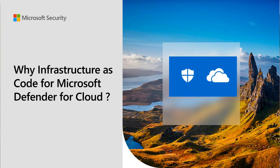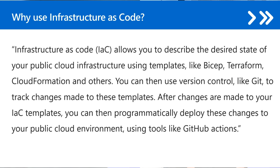One of the core concepts around managing Defender for Cloud as code is infrastructure as code. So my question is, why are we actually using IaC at all for this? Well, infrastructure as code, or IaC, has a lot of advantages. One of which is it allows you to describe the desired state of your public cloud infrastructure using templates — and that can be in BICEP, Terraform, CloudFormation, and others.